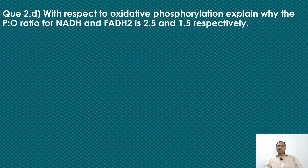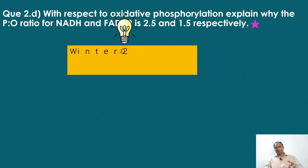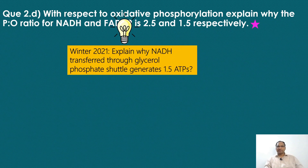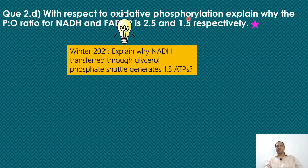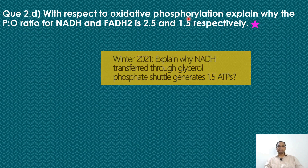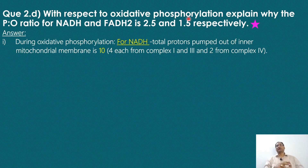The next question: explain why the P/O ratio of NADH and FADH2 is 2.5 and 1.5 respectively. During oxidative phosphorylation, for NADH, the total protons pumped out of the inner mitochondrial membrane is 10: 4 protons each from complex I and complex III, and 2 protons from complex IV. For synthesis of 1 ATP, the average number of protons entering the F0F1 complex is 3. Additionally, for transport of inorganic phosphate into the mitochondrial matrix, 1 hydroxyl ion exits — equivalent to entry of 1 proton. So total protons required per ATP is 4.